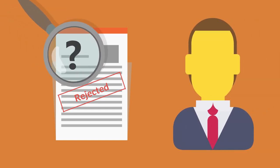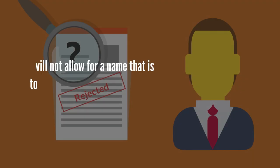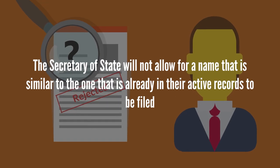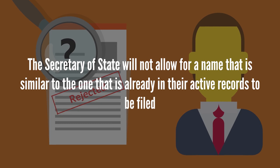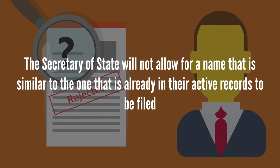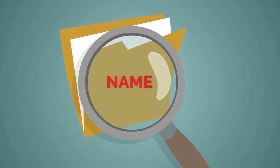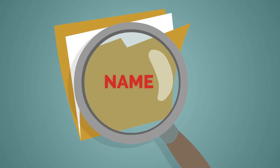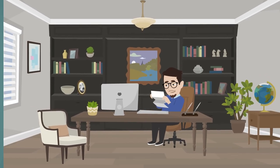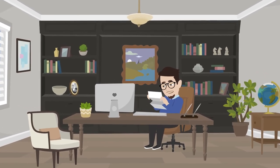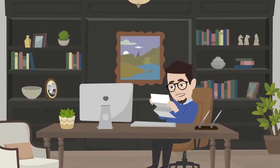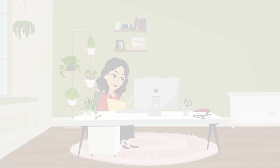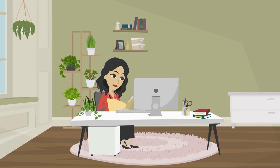One of the most frustrating rejections to receive from the Secretary of State is that the name you have chosen is unavailable. The Secretary of State will not allow a name that is similar to one already in their active records to be filed — your name must be distinguishable from anything currently on file. Before settling on the business name you would like to see on your letterhead, it's a good practice to have your service company — preferably United Corporate Services — conduct a name availability search.